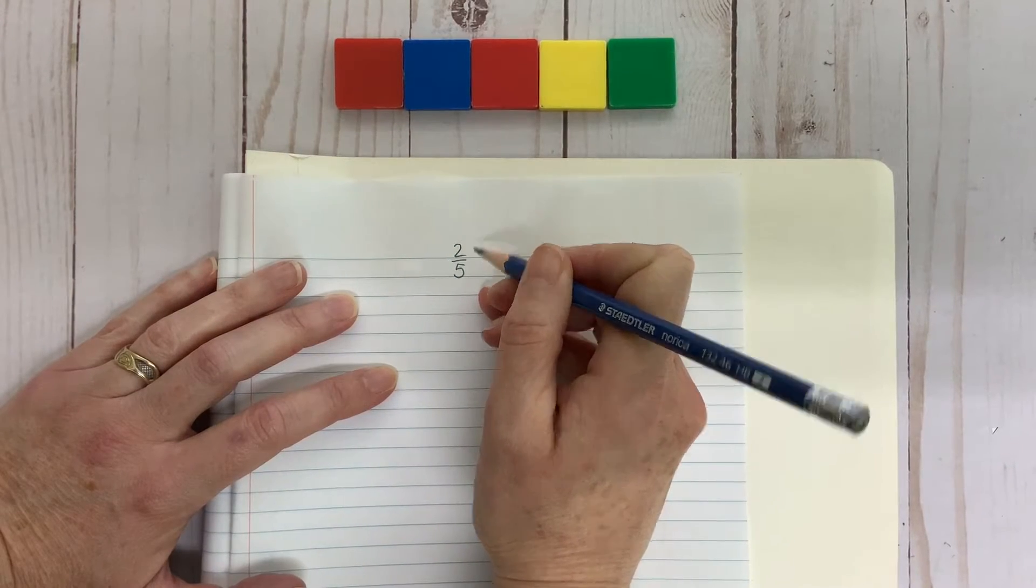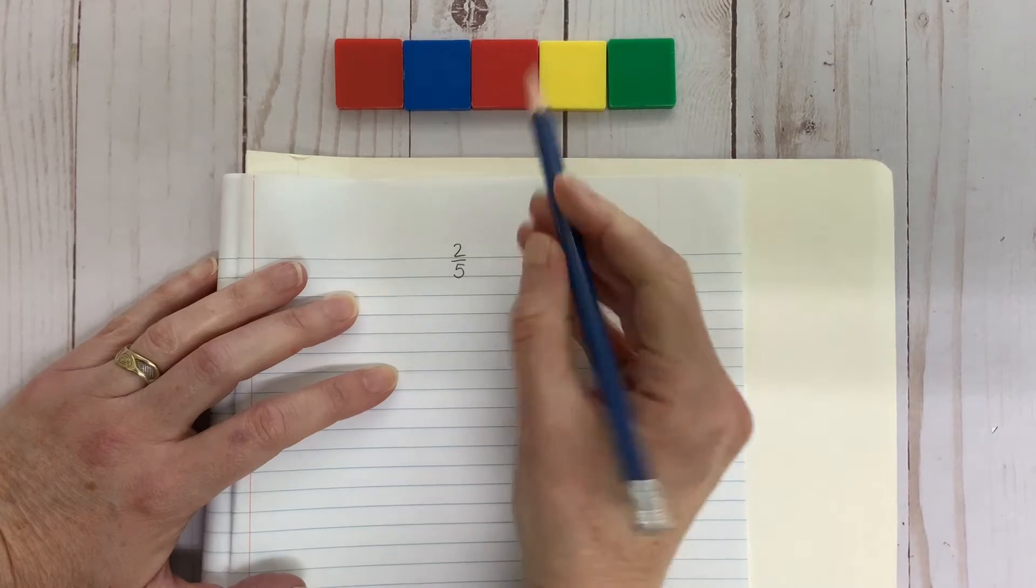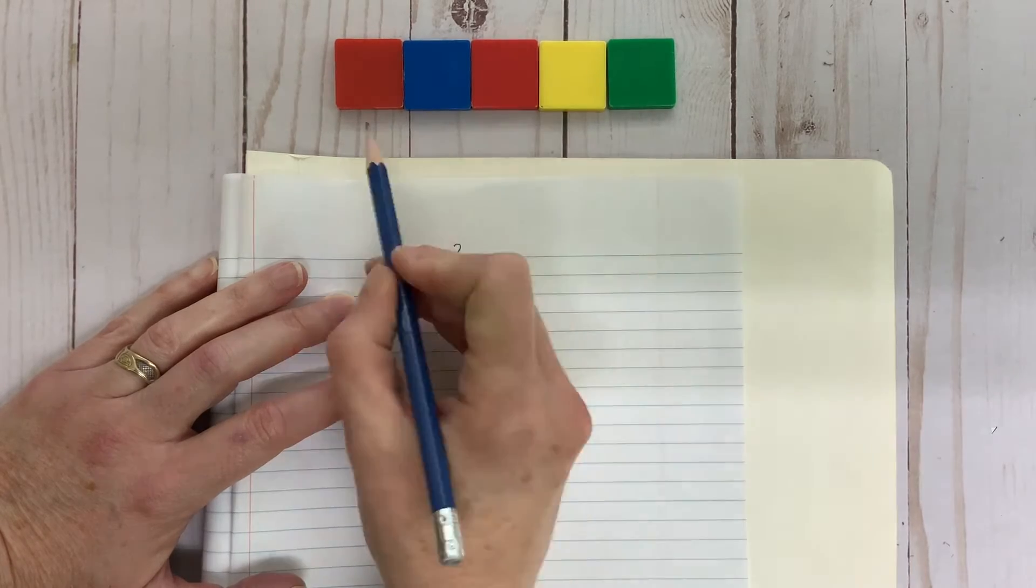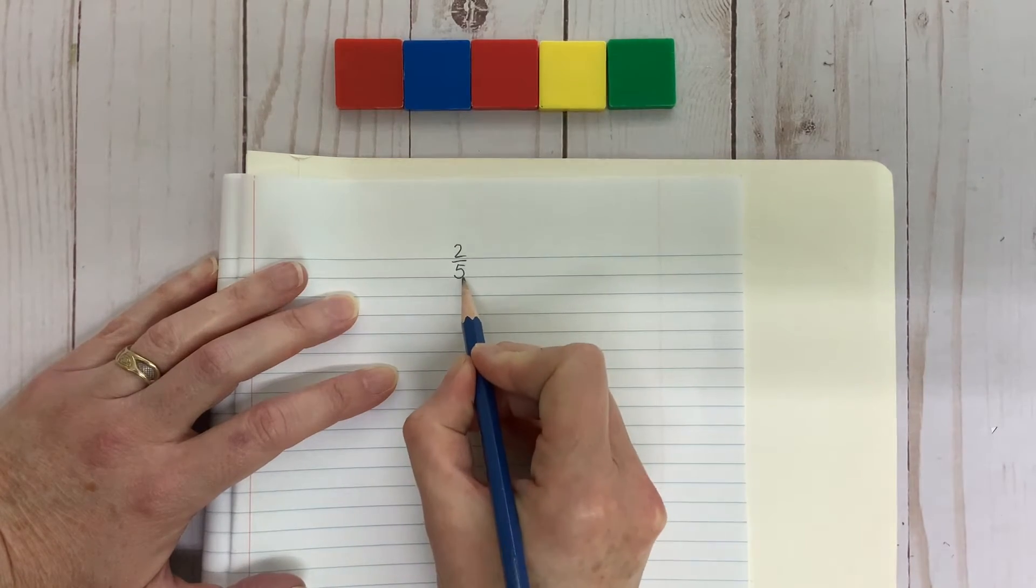Hopefully, you remembered to compare the red part, two tiles, to the whole rectangle, which is five tiles, because that is what a fraction is for, comparing parts to wholes.